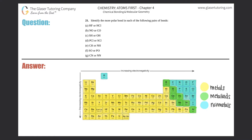Number 21: identify the more polar bond in each of the following pairs of bonds — parts a through g. For each letter we have to figure out which bond is going to be more polar. For example, for a, would HF be more polar or would HCl be more polar? To answer this, the more polar bond comes from the greatest electronegativity difference.